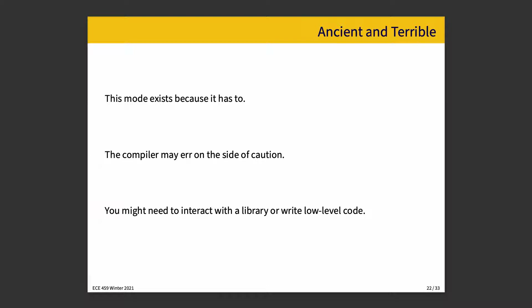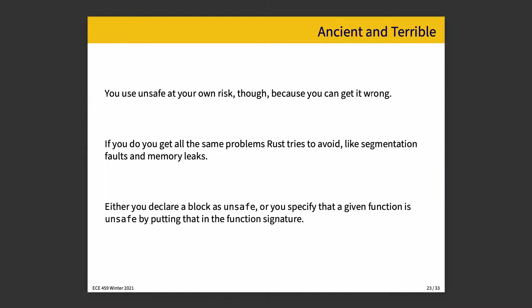For these purposes, we get the option, if we wish, to turn off some of the safeties. We can override the defaults and tell the compiler we promise we know it's okay, or at the very least we accept that things could go wrong. You do so at your own risk, because if you get it wrong, you get all the problems that Rust tries to avoid: segmentation faults, memory leaks, any of those kinds of things.